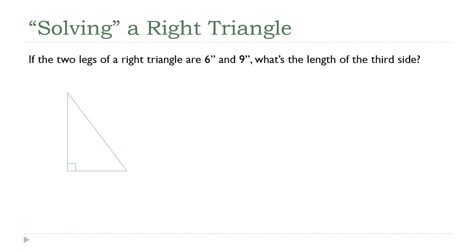As far as the formula we're going to use is concerned, it doesn't matter which one gets to be A and which one gets to be B. So I'm going to let A be the 9-inch side and B be the 6-inch side. That leaves the hypotenuse, which is always going to be C.